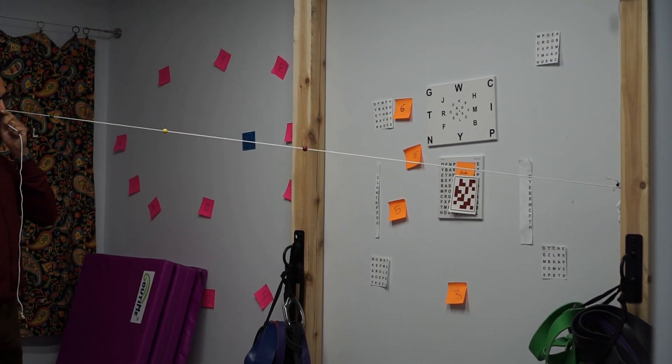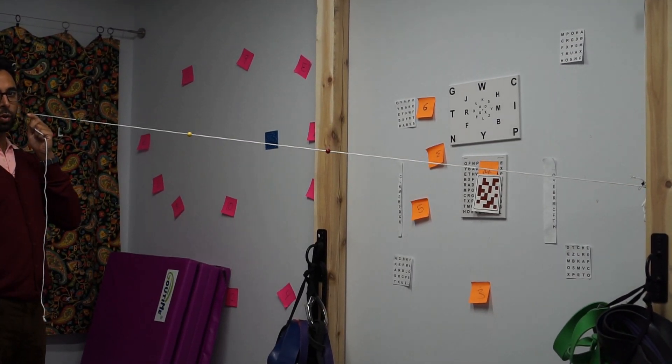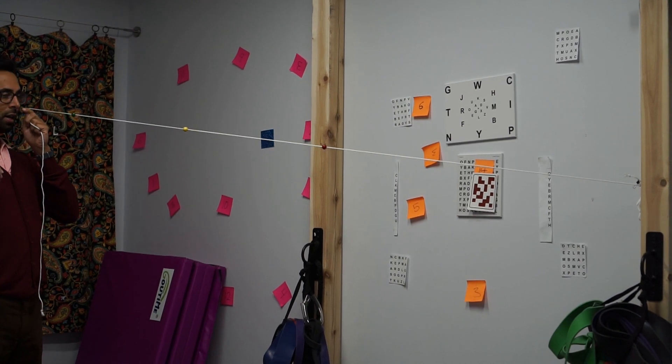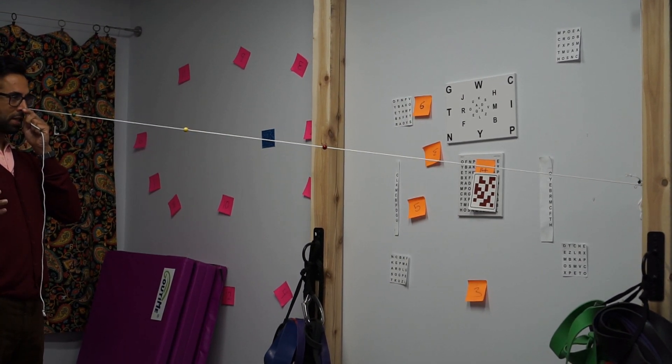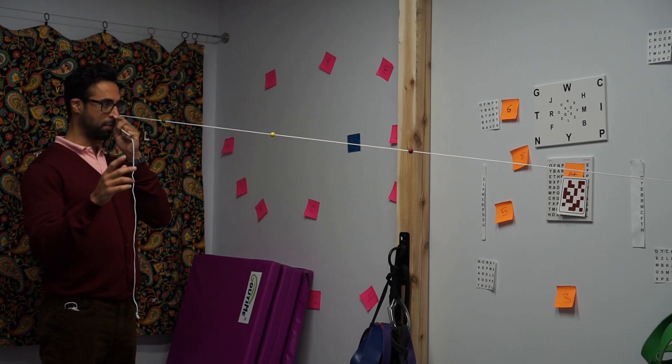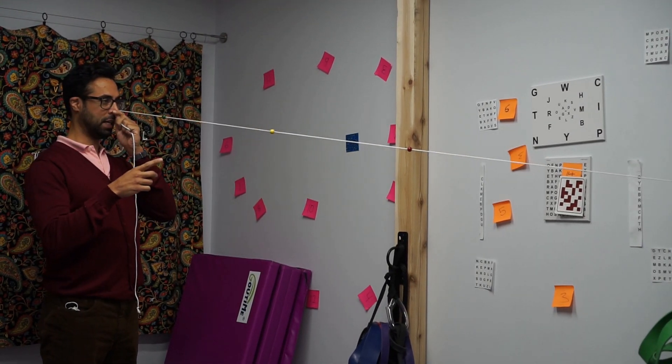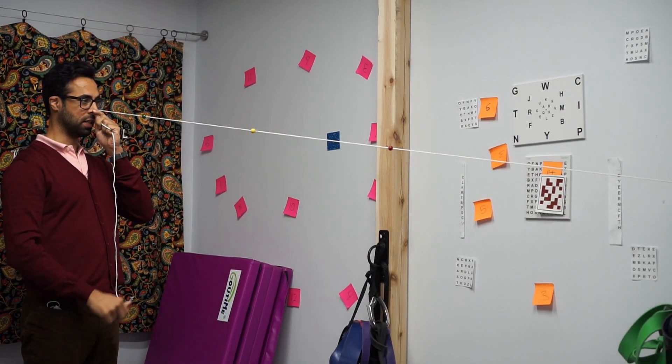What you're doing here is, you can refer back to our other video on the Brock String, so we're doing the same thing basically, except this time what we're doing is I'm looking at the red bead and I'm making sure that I'm seeing two yellow beads and two green beads.